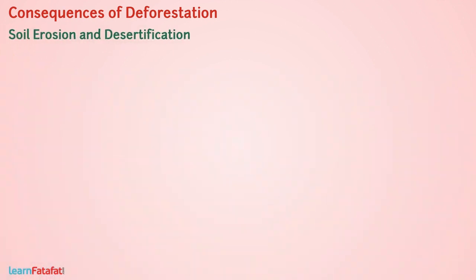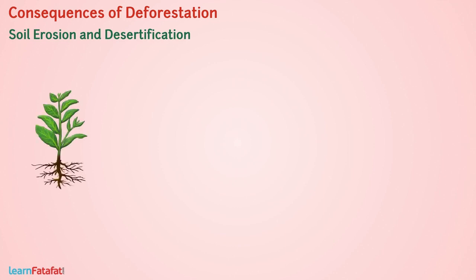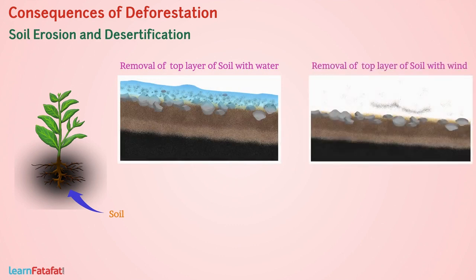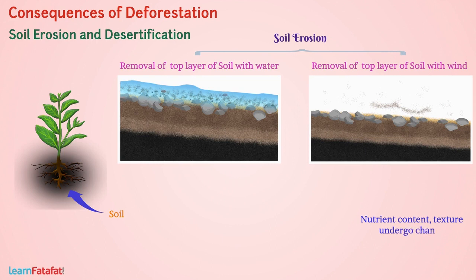Soil erosion and desertification. Roots of plants hold soil in place. Deforestation leads to the removal of the top fertile layer of soil by water and wind — this is called soil erosion — due to which properties of soil like nutrient content and texture undergo change, thereby gradually converting the land into desert.